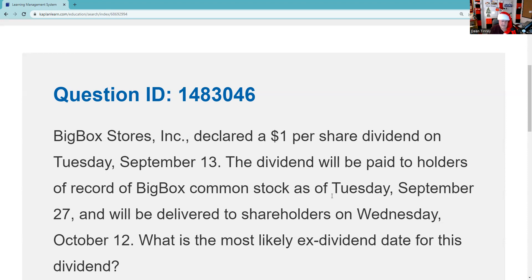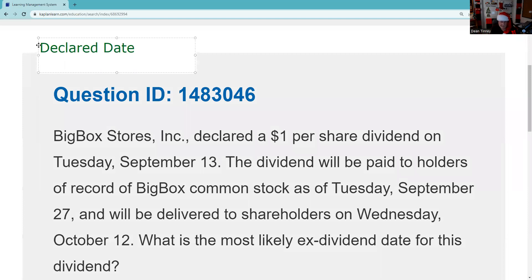This is SIE exam content, though you should know this for Series 7 as well. Big Box Stores declared a dollar dividend — that's called the declared date. On the SIE we don't really care about the declared date. If you're going on to take a Series 7, 65, or 66, we might care in terms of knowing that it becomes a current liability and causes working capital to decrease. But for purposes of the SIE, that's not what we're most interested in.